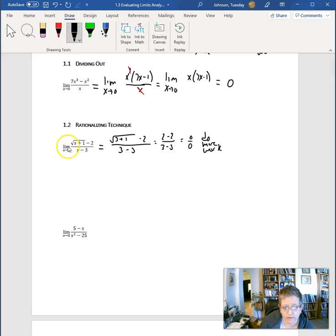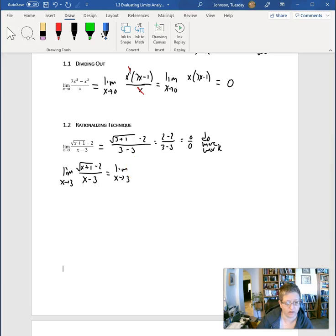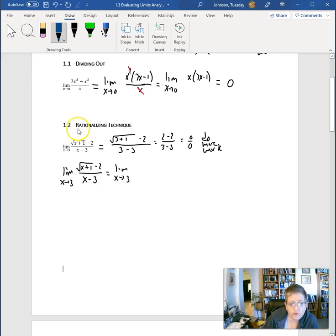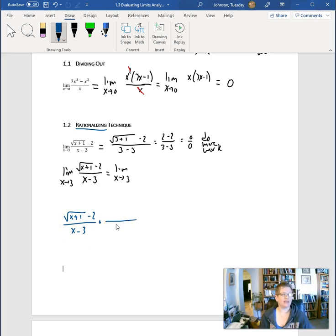We're going to take this function. I'm not going to deal with the limit right now. I'm just going to find a similar function. So we're going to find a new function. What we're going to do is rationalize. And it's weird because we normally rationalize the denominator.